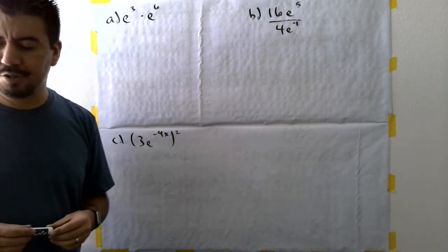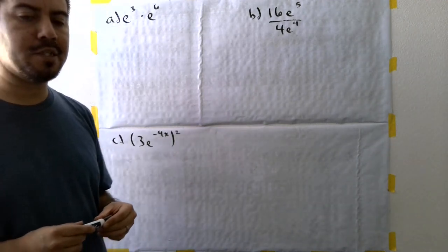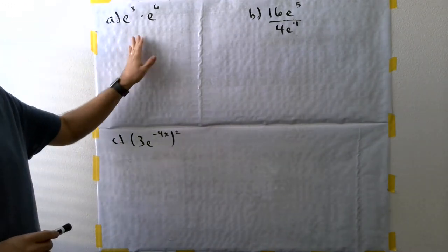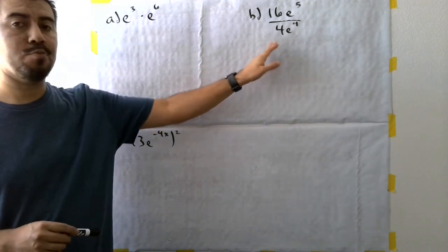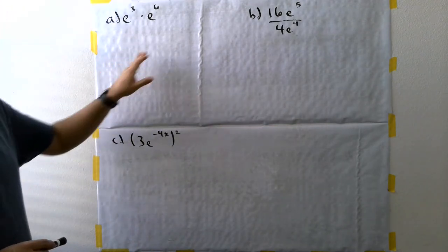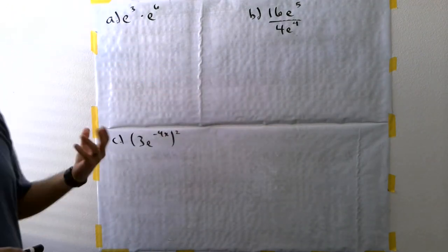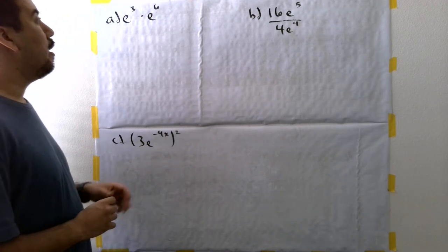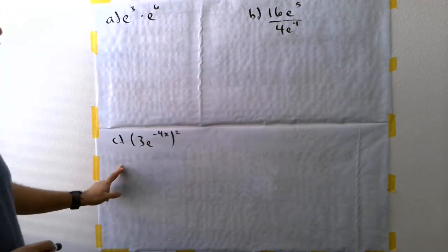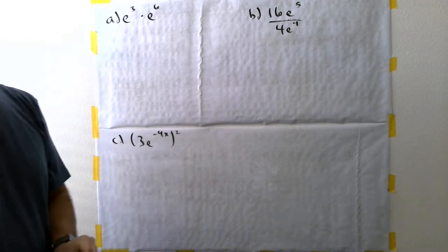In this video, I'm going to show you how to simplify natural base expressions. You're going to see what type of properties we're going to use — properties of exponents — in order for us to simplify each expression. We're going to work through problems A, B, and C, and you're going to follow along with the steps.